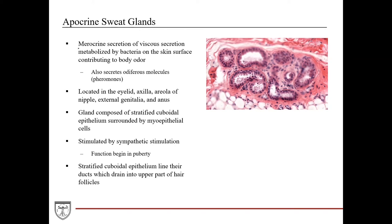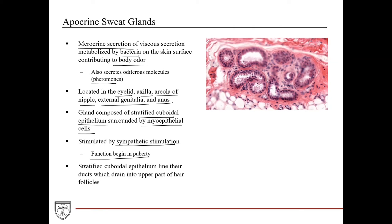Apocrine sweat glands also carry out merocrine secretion of a viscous secretion that is metabolized by bacteria on the skin surface, contributing to body odor. They also secrete odiferous molecules such as pheromones. These are located in the eyelid, axilla, areola of the nipple, external genitalia, and anus. The gland itself is composed of stratified cuboidal epithelium surrounded by myoepithelial cells, is stimulated by sympathetic stimulation, and its function begins in puberty. Stratified cuboidal epithelium lines the ducts, which drain into the upper part of hair follicles at the surface of the skin.